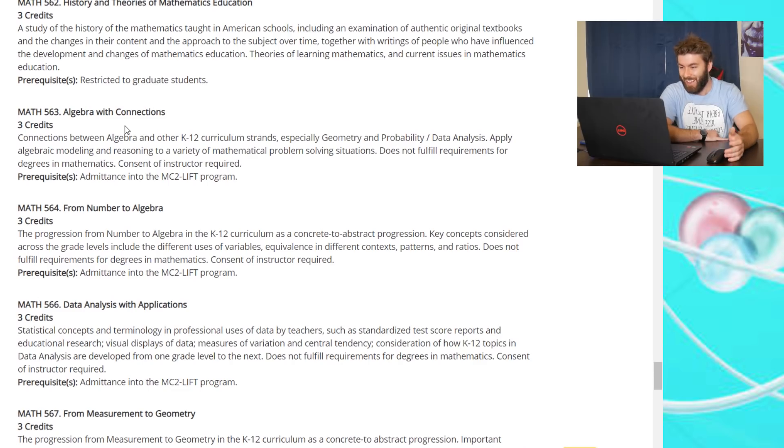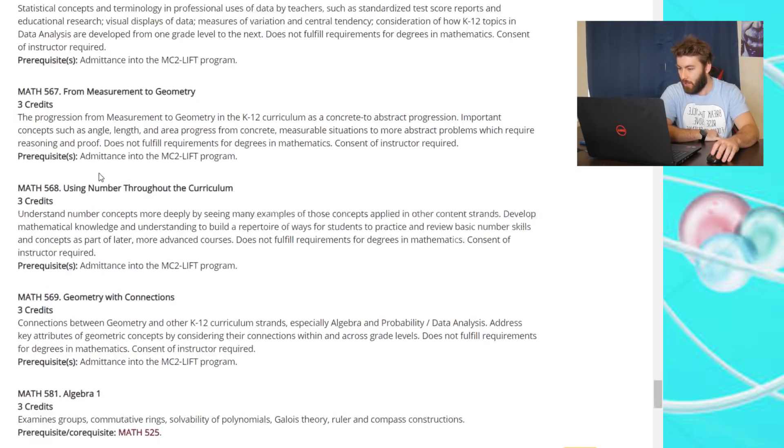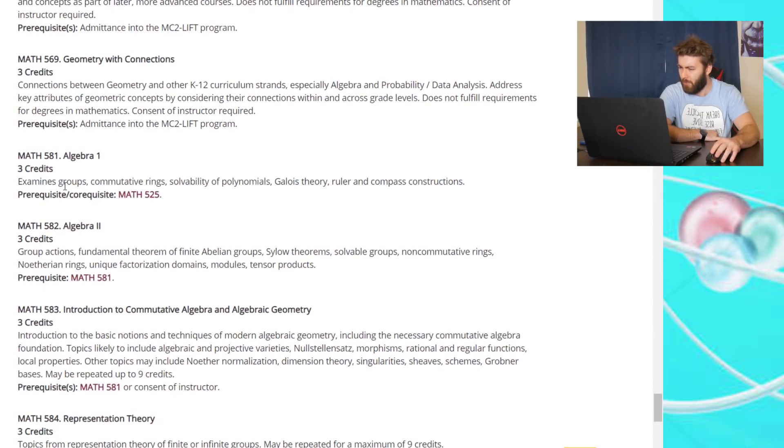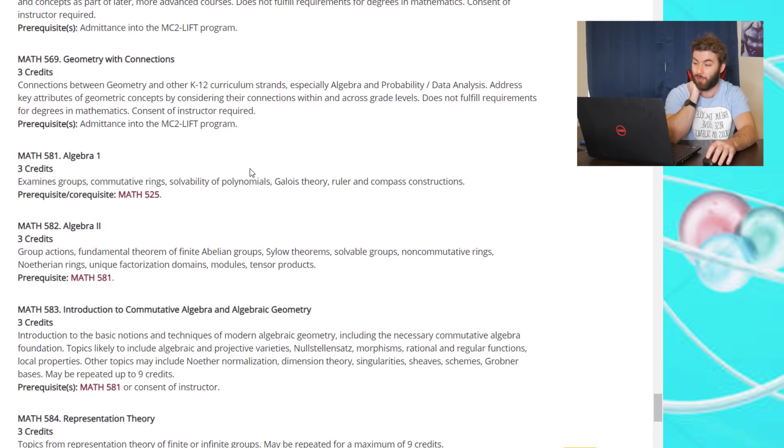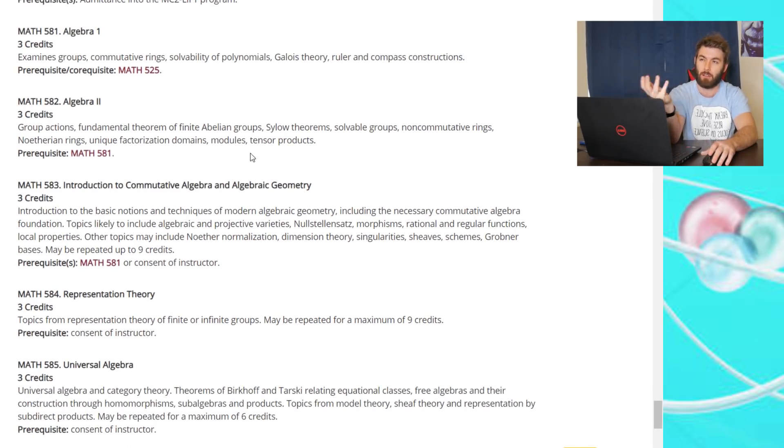Algebra with connections? I thought that was connection coefficients or something. Let's keep going down. Geometry with connections. Algebra one. I thought that was when I was in high school, we would have algebra one and then algebra two trig. I thought that that's what I was just reading. But no. Examines groups, commutative rings, solvability of polynomials, Galois theory, ruler and compass constructions. Algebra two, group actions, fundamental theorem of finite abelian groups, Sylow theorems, solvable groups, non-commutative rings, Noetherian rings, unique factorization domains, modules, tensor products. I would love to take both of those courses, that would be pretty cool. That's one of those courses, to get a math minor at ODU, you didn't have to take abstract algebra, but I wish you did. I really wish I took that course.